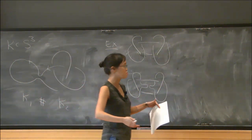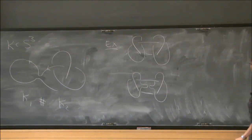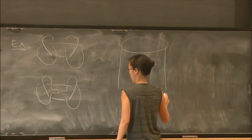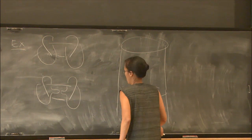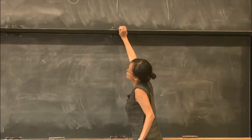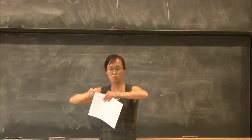If we're just performing an isotopy, we're just sort of wiggling our knot around. In terms of the surface that we see in S³ × I, well, it's going to look like a cylinder.